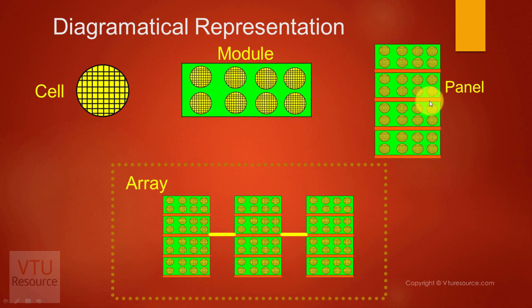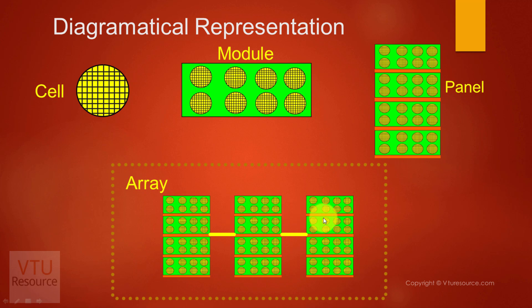Arrays. Two or more panels are interconnected together to form an array. Arrays are usually used where more electricity is generated, that is, in a solar power plant, where solar energy is converted into electrical energy.